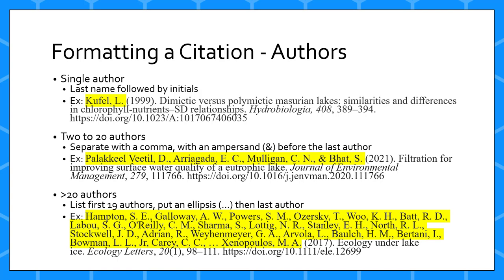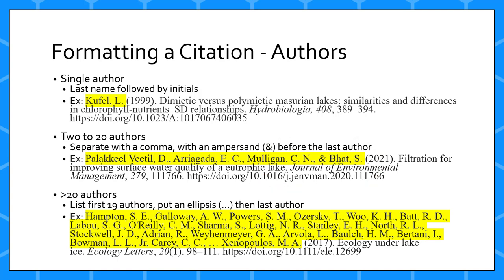A citation will start with the authors. List the authors in the order they are found on the paper, with the last name, a comma, and the first and middle initials, each with a period and a space between, followed by a comma before the next author. If there are between 2 and 20 authors, put an ampersand before the last author. If there are more than 20 authors, list the first 19 authors, put an ellipsis, or three periods, and then list the last author. When using an ellipsis, do not use an ampersand.